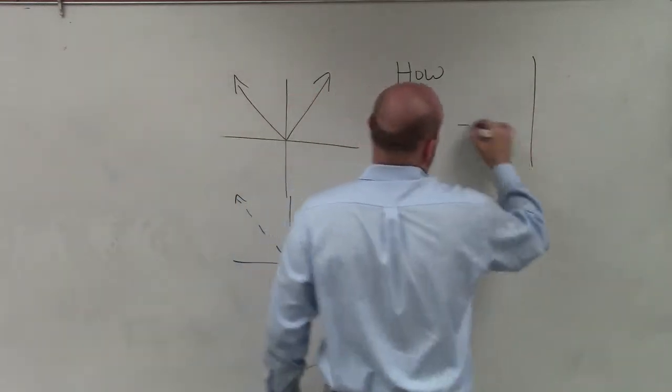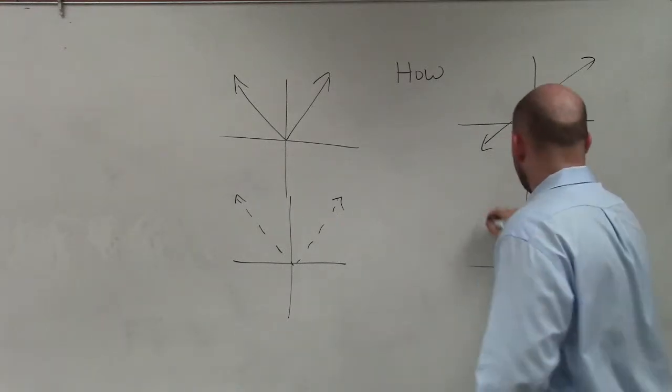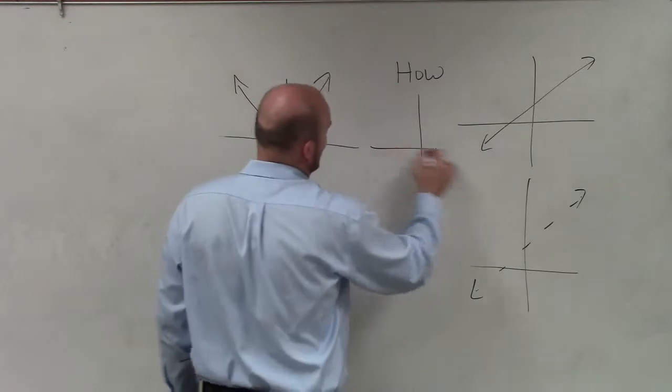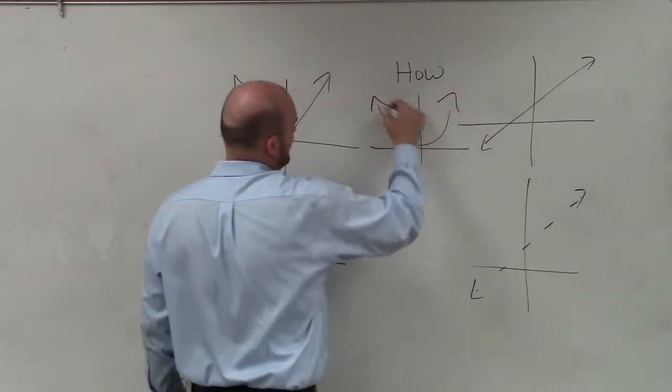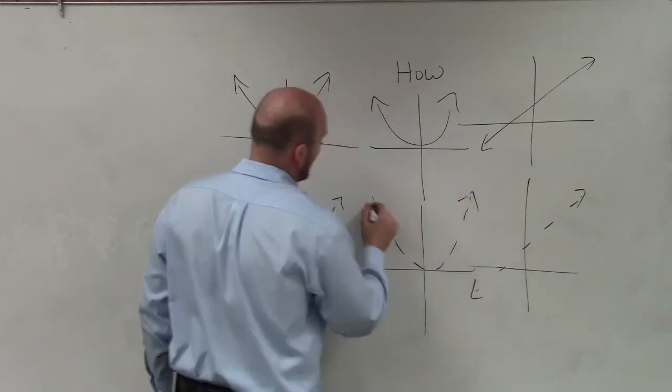If we're dealing with a linear equation, solid or dashed? If we're dealing with a quadratic, how do we know if it's solid or dashed? And obviously, test points are a great method to always check